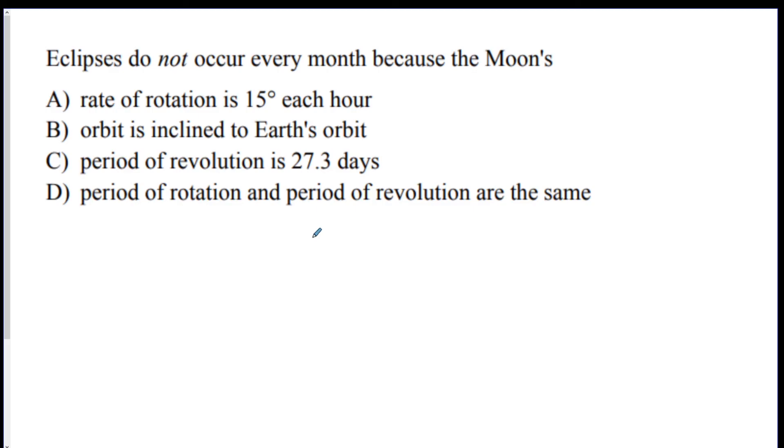Eclipses do not occur every month because the Moon's blank. Good job. The Moon's orbit is inclined or tilted compared to the Earth's orbit. The rate of rotation is 15, this is the Earth's rate of rotation, so that's wrong. Period of rotation and revolution being the same, this causes the same side of the Moon to be facing us, but it's not the reason why there's no eclipses. And the period of revolution being 27.3 doesn't affect eclipses.